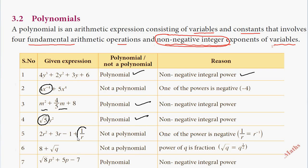This is 1 by r. This is negative power, so this is not a polynomial.